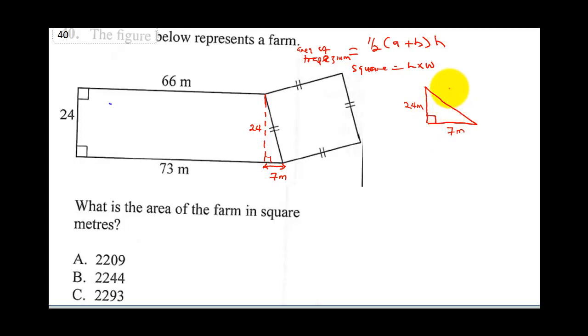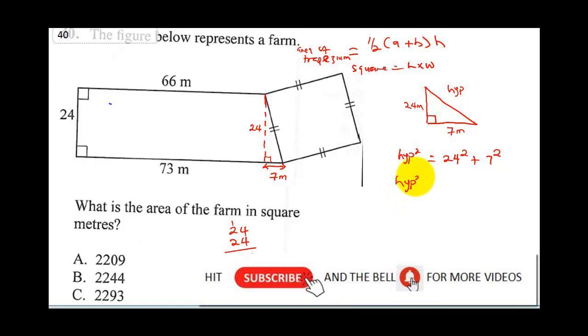Now, what do you do here? This is your hypotenuse. So you apply Pythagorean theorem so you can get the length of here. So your hypotenuse squared is going to be 24 squared plus 7 squared. So what will 24 squared give us? 24 multiplied by 24 will be 4 times 24. This will be 4 times 4 is 16, carry 1. 4 times 2 is 8 plus 1 is 9. 2 times 24 will be 48. When you sum this up, this will give you 576.